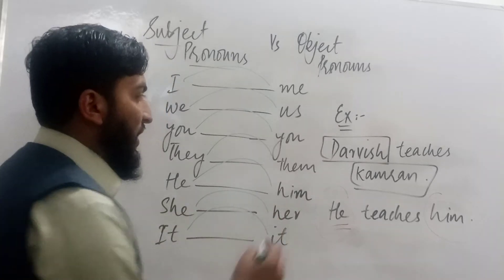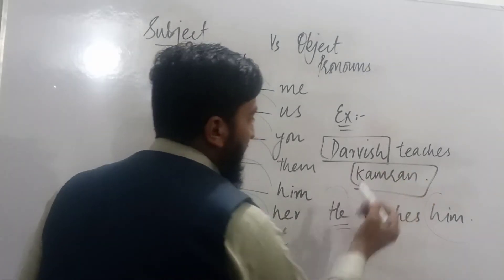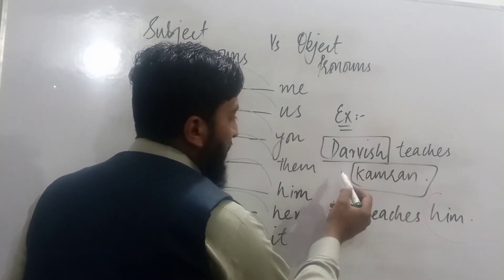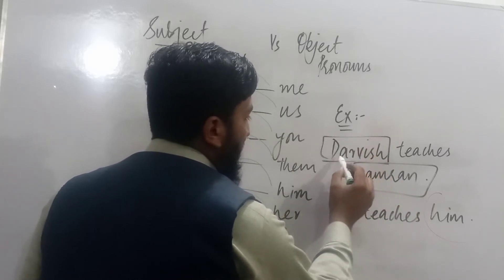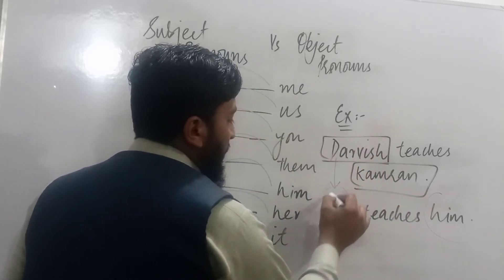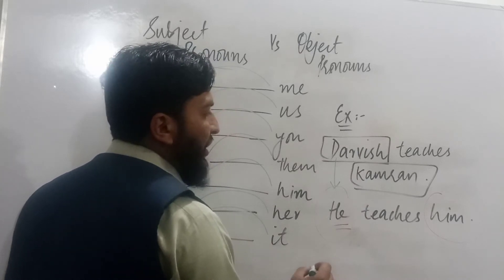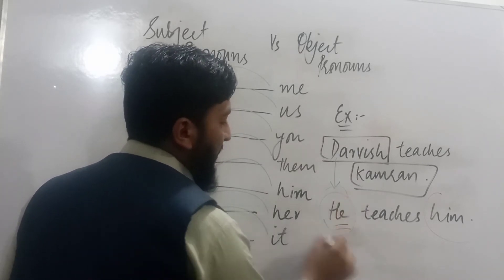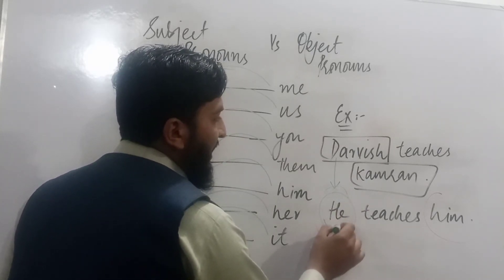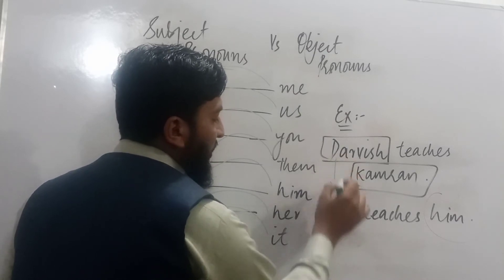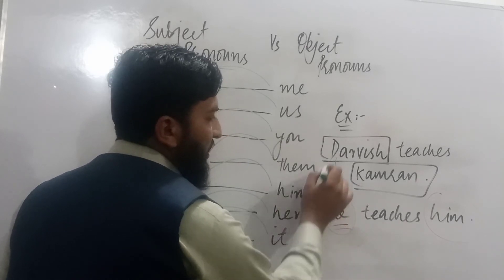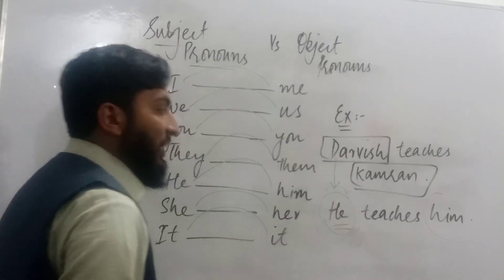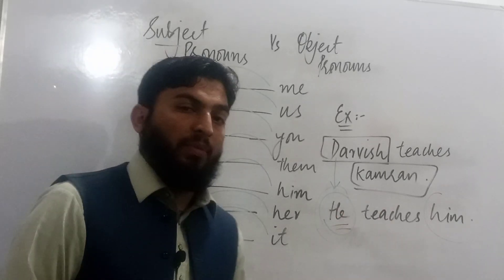For example, consider the sentence: Darvesh teaches Kamran. Darvesh is the subject and Kamran is the object. When I ask about the subject, I usually use who — who teaches Kamran? He teaches Kamran. So 'he' replaces Darvesh, making Darvesh the subject and 'he' the subject pronoun. Similarly, 'him' replaces Kamran as the object pronoun.